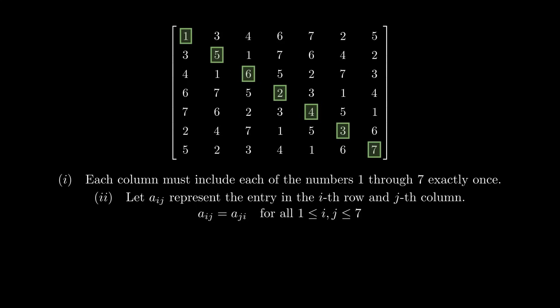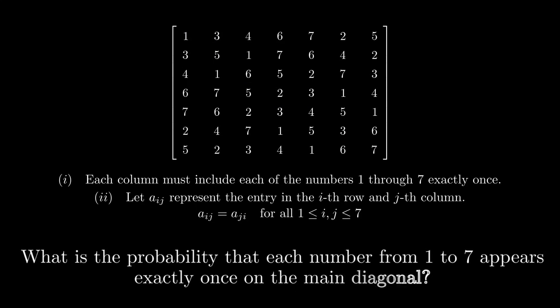Now, these elements form the main diagonal of the matrix. The problem asks, what is the probability that each number from 1 to 7 appears exactly once on the main diagonal? Pause the video here if you want to give it a try.